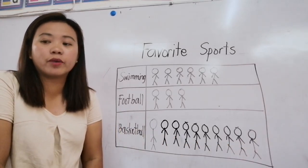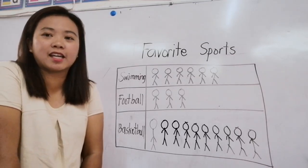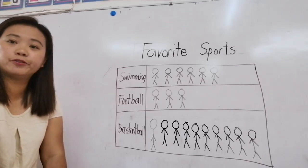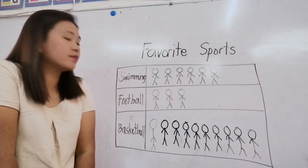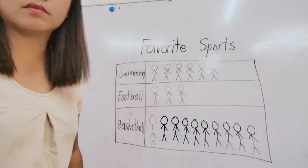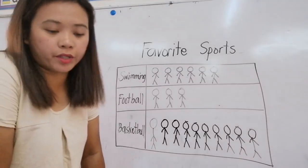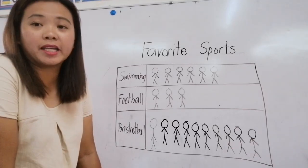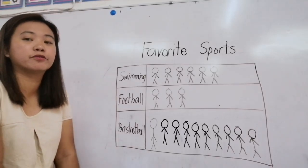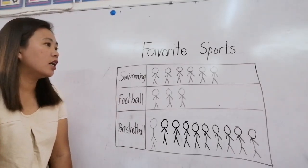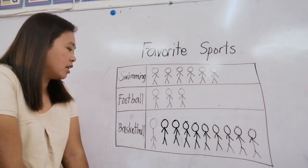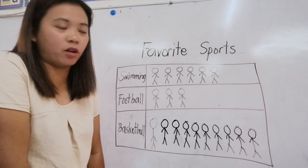Now I'm going to give you a question. How many children like swimming? How about football? How about basketball? Which sport is least liked by the children? It means the smallest number of children voted for this one. That's right, it's football. How about their favorite sport? It's basketball.